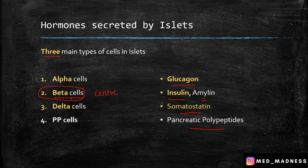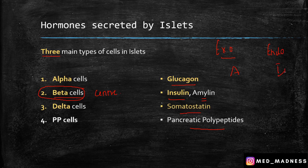So what is the take-home point? The pancreas carries out both exocrine and endocrine functions. The exocrine function is carried out by the acini, which secrete digestive enzymes that help with protein, lipid, and carbohydrate digestion. The endocrine function is carried out by the islets of Langerhans, where alpha, beta, and delta cells secrete glucagon, insulin, amylin, and somatostatin, which help with metabolism in our body.